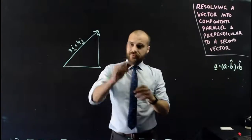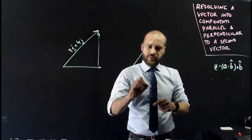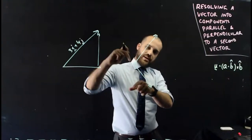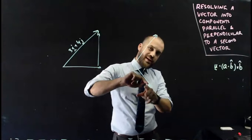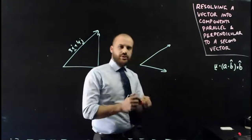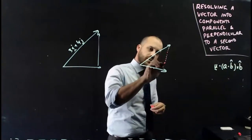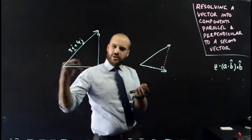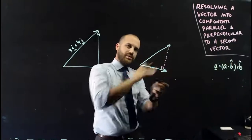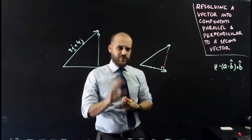Now, what we can do instead is take that vector and resolve it into components based upon a different vector. In this case, I can take this vector and say, okay, how many steps in this component and how many steps in a component that's perpendicular to that. Let's use this one instead. How many steps along here and how many steps along here? We're no longer using i and j. We're using this as our i vector and the perpendicular as our new j vector. So we're going to resolve a vector into components parallel and perpendicular to a second vector.